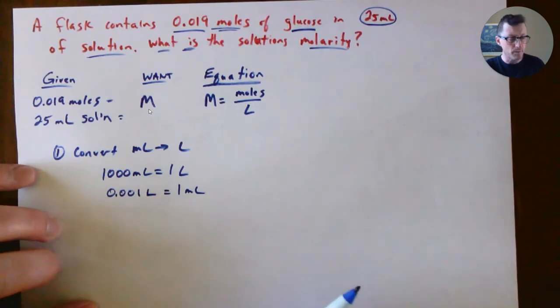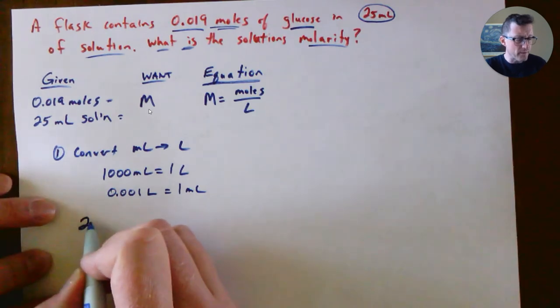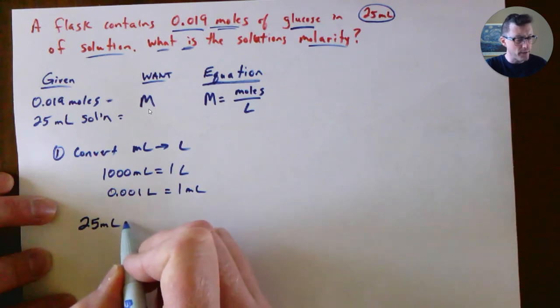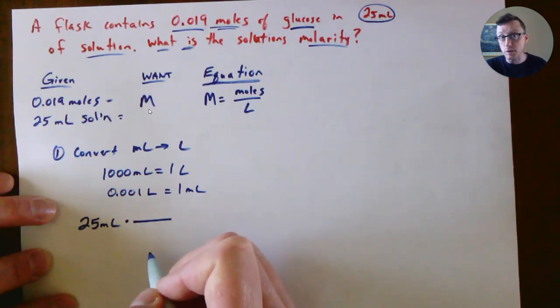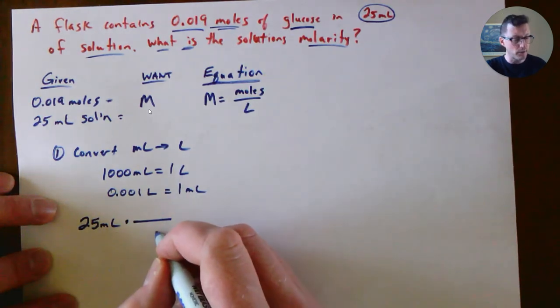We have 25 milliliters and we want that into liters. If we do it as a conversion, multiplying by a blank fraction, we want milliliters to cancel. In any conversion where you have the multiply sign between them, you need to have milliliters on the bottom.